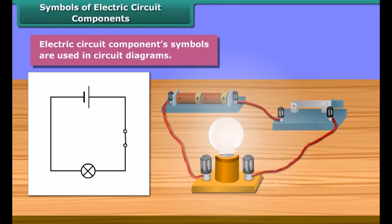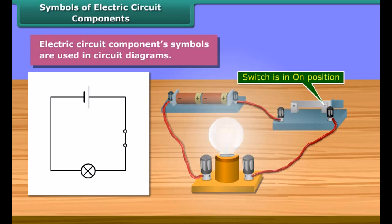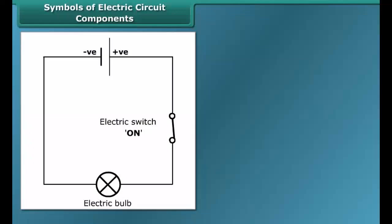Electric circuit component symbols are used to make circuit diagrams. It is much easier to represent a circuit diagram using symbols. This is the symbol of a switch in the on position; this one is in the off position.